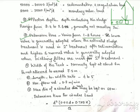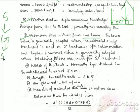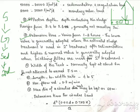Detention time is 1 to 2 hours — we have to choose lower values. For second-degree treatment, we need to do screening, then a grit chamber, then a primary sedimentation tank. The fourth step is secondary treatment. There are many methods in secondary treatment, including the activated sludge process, for which we choose a lower detention time value.